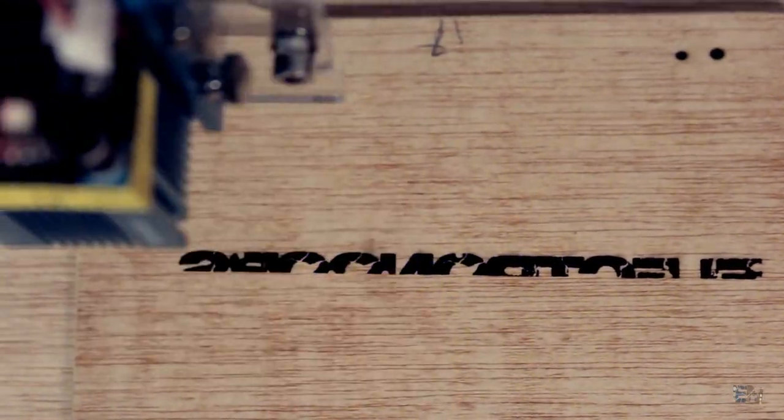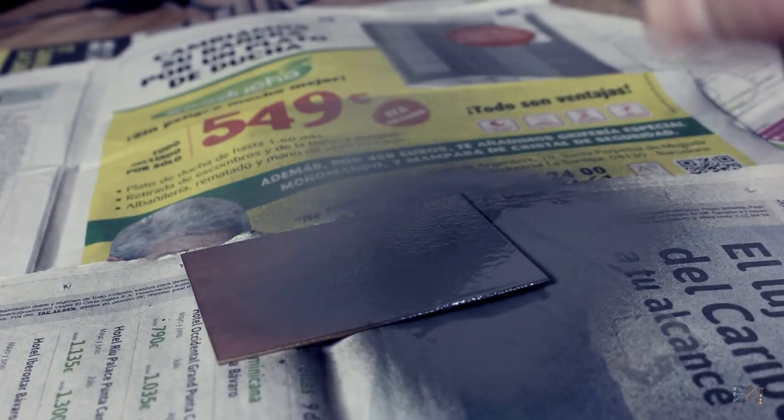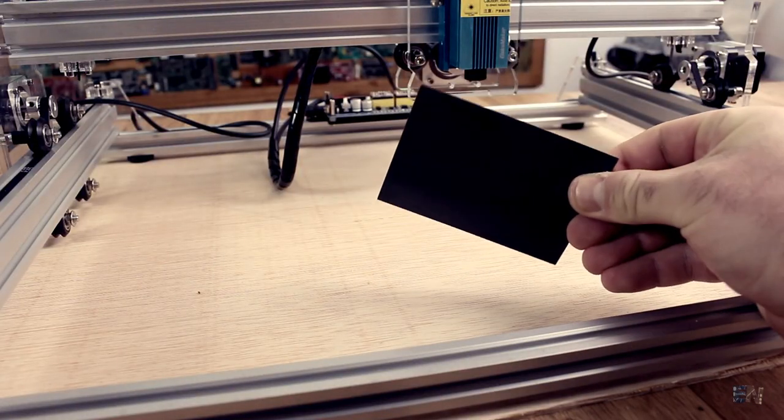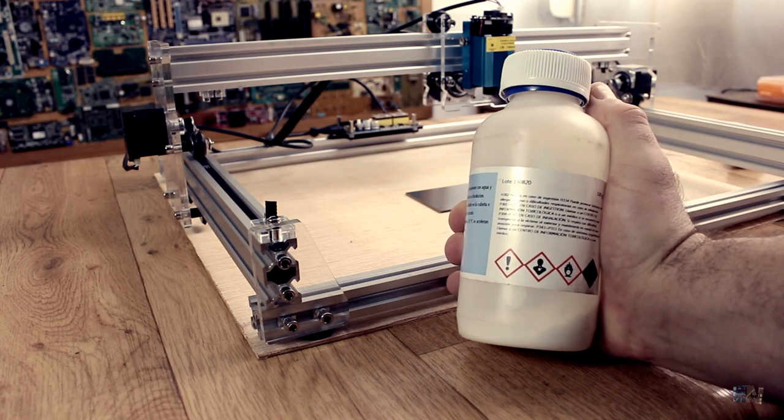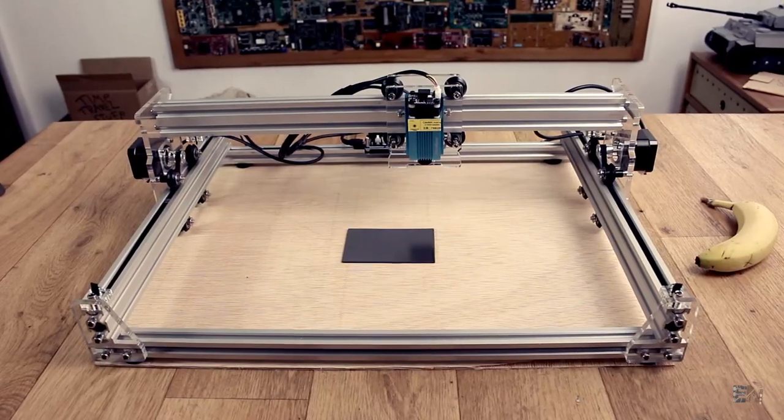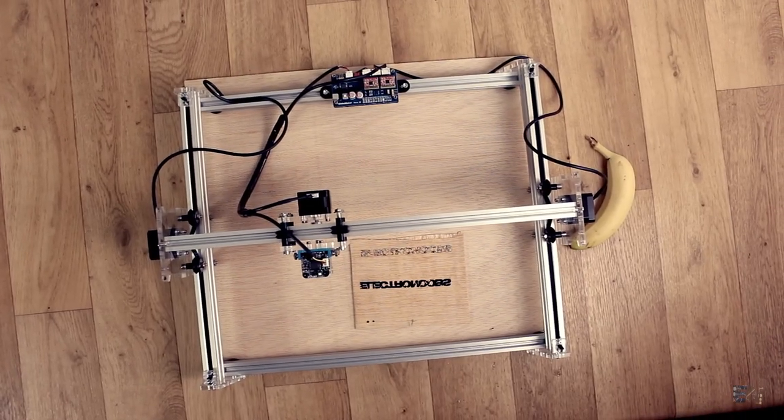My plan is to etch a PCB using the nice precision of the laser. I want to paint black the PCB, burn the layout with the laser, and then etch the PCB using chemical process. I've seen this type of PCB etching so I have to try it, but that is for a future video.